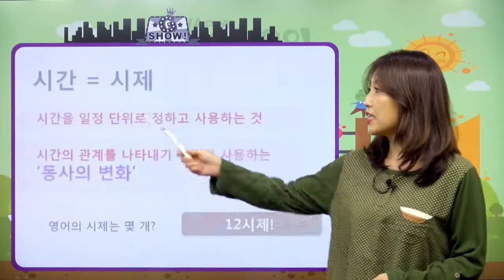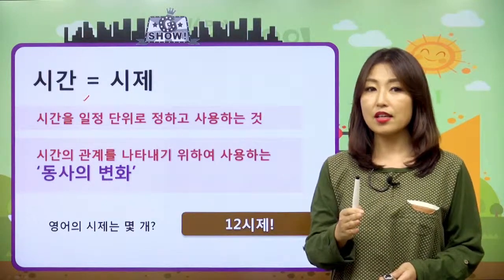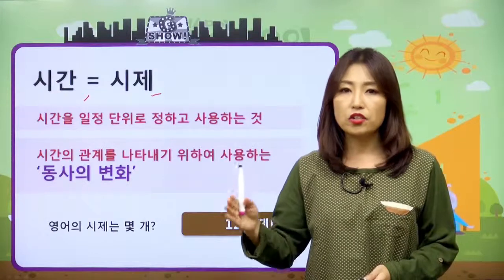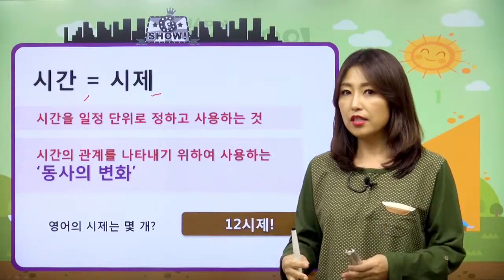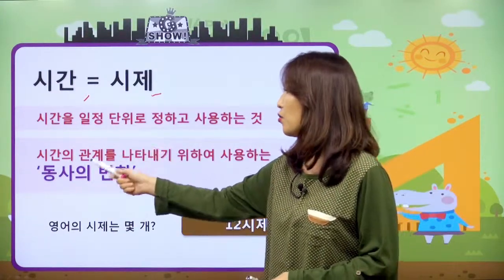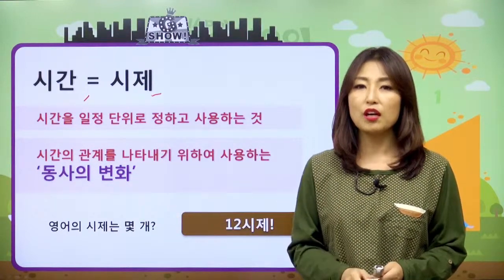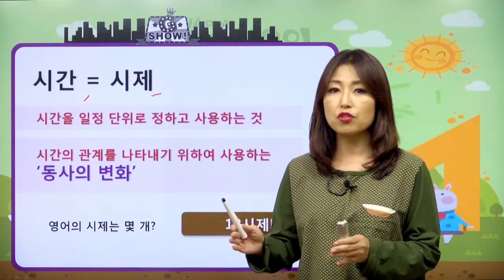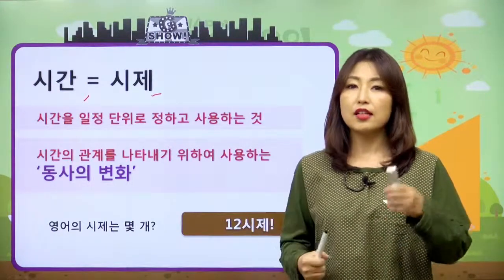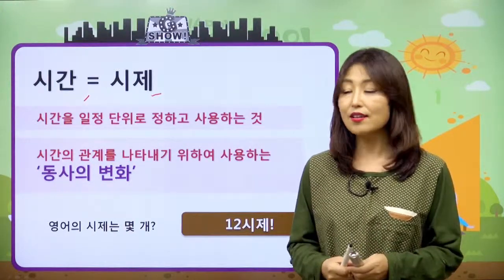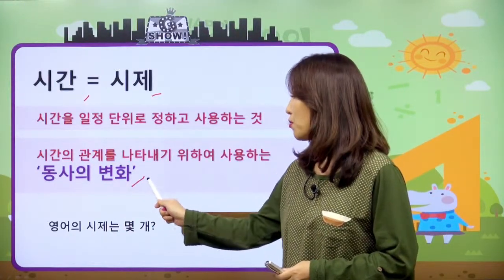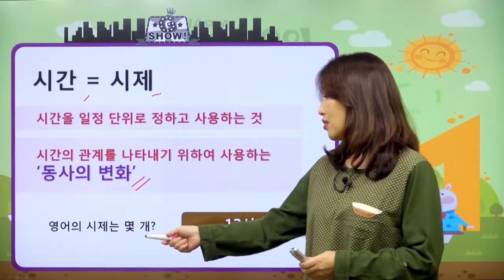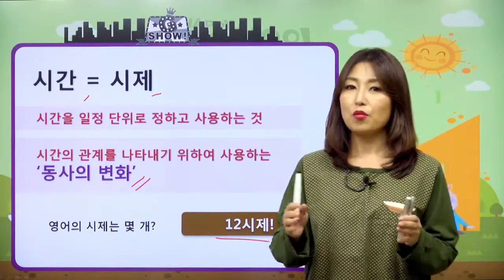시간의 개념에 대해서 정리를 했었는데, 시간과 시제 — 시간을 일정 단위로 나눠서 사용하는 게 시제다라고 설명을 했었어요. 그 시간의 관계를 나타내는 중요한 키가 뭐냐면 동사의 변화라고 했었어요. 동사는 영어의 팔품사 중에 유일하게 시간을 나타낼 수 있고 자기를 변신하는 아이라고 했었죠. 그래서 동사의 변화로 영어 문장에서 시간을 짐작할 수 있고, 영어의 시제는 열두 시제라고 했었어요.